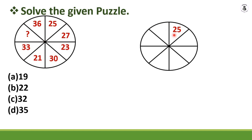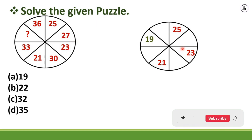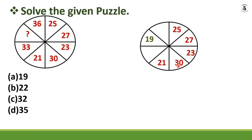So one series goes: 25, then 25 minus 2 equals 23, then 23 minus 2 equals 21, and 21 minus 2 equals 19. To confirm with the other series: 27 plus 3 equals 30, 30 plus 3 equals 33, and 33 plus 3 equals 36. Both series are consistent, so the final answer is 19 — option A.